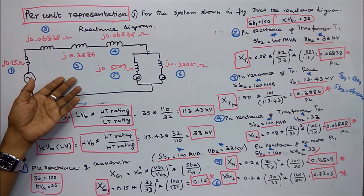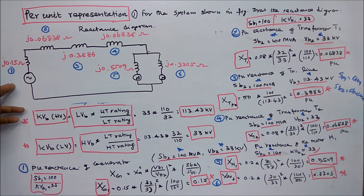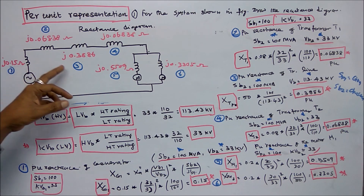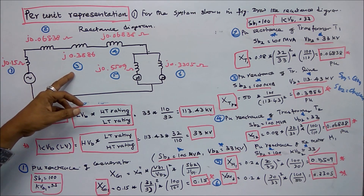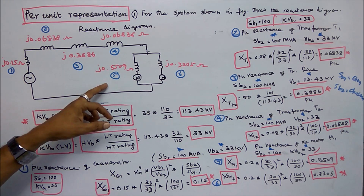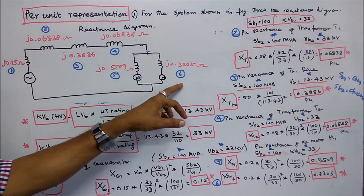This is the reactance diagram of the given network. One is the generator with reactance J0.15. The second is a transformer with J0.06838. Third is the transmission line with J0.3886. Fourth is again a transformer with J0.06838. Fifth is a motor with J0.5509. Six is the motor with J0.3305.